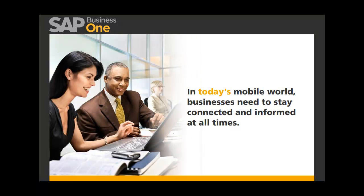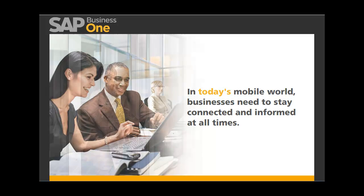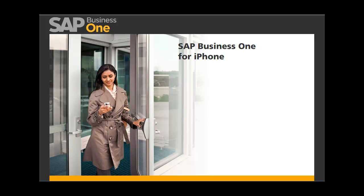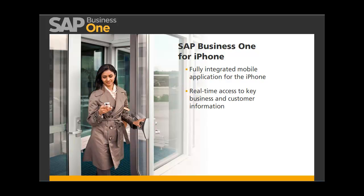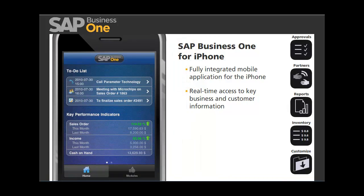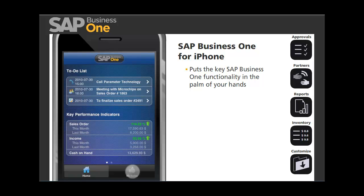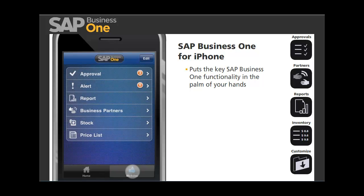In today's mobile world, businesses need to stay connected and informed at all times. To help you keep pace, the SAP Business One application provides a fully integrated mobile application for the iPhone that provides real-time access to key business and customer information. Let's take a few minutes to explore how this innovative mobile app puts the key SAP Business One functionality in the palm of your hands so you can operate more productively on the go.